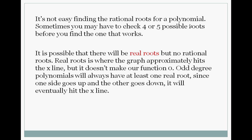It is possible that there will be real roots but no rational roots. Real roots is when the graph approximately hits the x line but it doesn't make the function 0. Odd degree polynomials will always have at least one real root. Since one side goes up the other side goes down, one of those sides is eventually going to hit the x line.